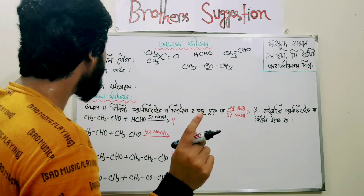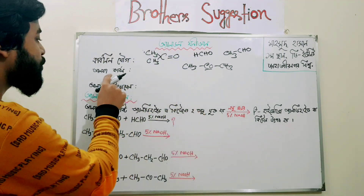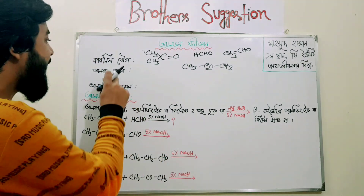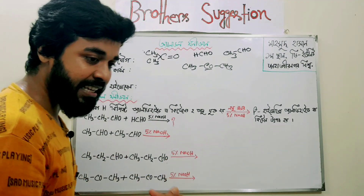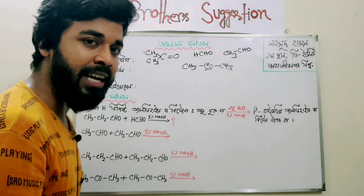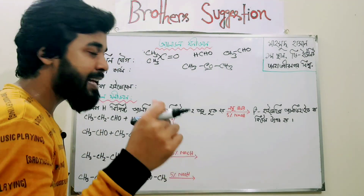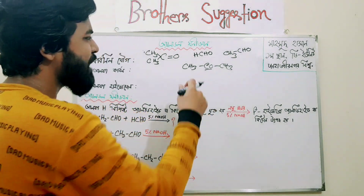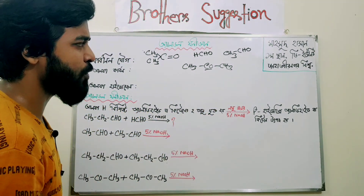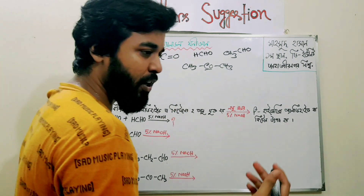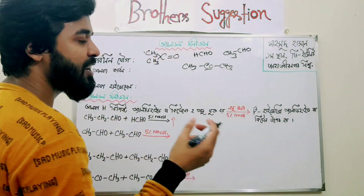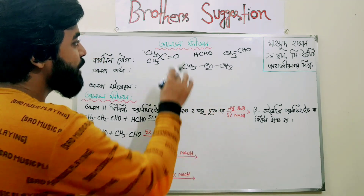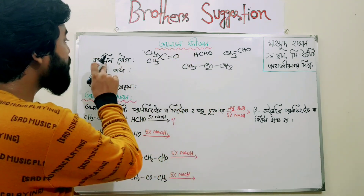This is a very important thing, which is alpha hydrogen. If carbon is carbon double bond oxygen, alpha carbon is that carbon adjacent to the carbonyl carbon. You can say it is alpha carbon. Which carbon is alpha carbon? We know that alcohol and carbon, or aldehyde, are involved.